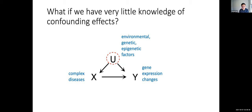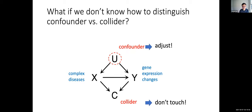The problem in practice is we don't have enough knowledge of backdoor variables. For complex disease and complex gene expression patterns, we don't have all the environmental and genetic effects influencing both. Additionally, observable environmental factor variables can themselves be colliders — if you don't condition on a collider, you don't create a backdoor path, but if you do condition on a collider, you create another backdoor path. The key research question is: how do we adjust for confounders only, without touching colliders?